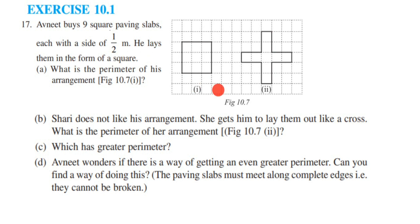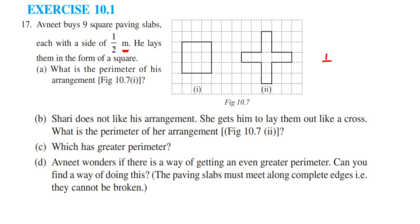The first question asks us to find the perimeter of this arrangement, which is in the shape of a square. They have given that each slab is of half meter — half is nothing but 0.5 meter. So each slab is of 0.5 meter.